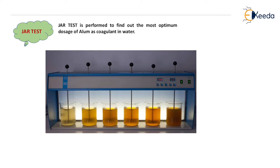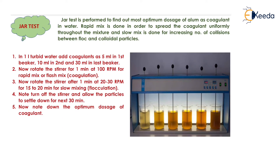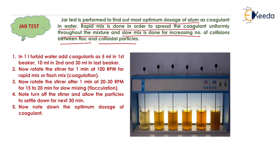To find the optimum dose of coagulant, the jar test is generally performed. Jar test is performed to find out the most optimum dosage of coagulant in water. Rapid mixing is done in order to spread the coagulant uniformly throughout the mixture, and slow mixing is done for increasing the number of collisions between floc and colloidal particles. Fast mixing is for spreading the coagulant uniformly in the water, and slow mixing is done to make all the particles come in contact with each other and form heavier flocs.